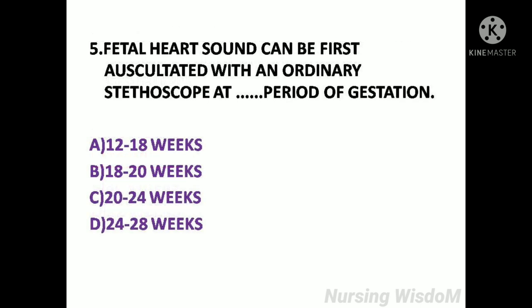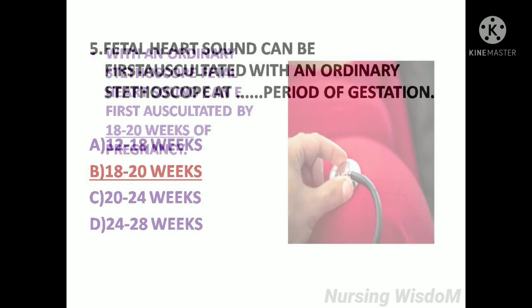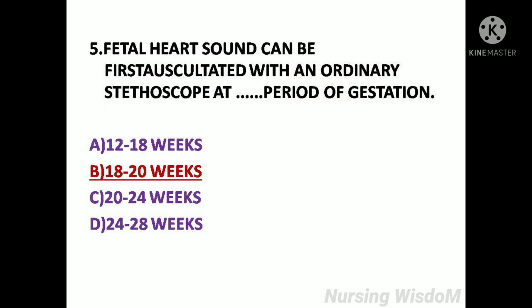Next question: Fetal heart sound can first be auscultated with an ordinary stethoscope at which period of gestation? Option A: 12 to 18 weeks. Option B: 18 to 20 weeks. Option C: 20 to 24 weeks. Option D: 24 to 28 weeks. With an ordinary stethoscope, fetal heart sounds can first be auscultated at 18 to 20 weeks of pregnancy. So the answer is Option B: 18 to 20 weeks.